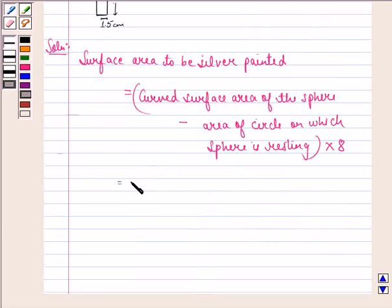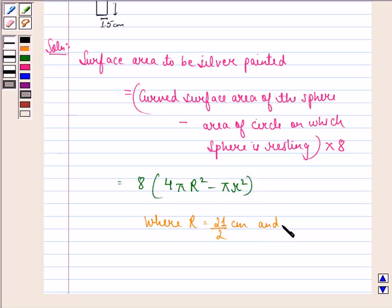That will be equal to 8 into 4πR² minus πr², where capital R is equal to 21 by 2 cm and small r is equal to 1.5 cm.